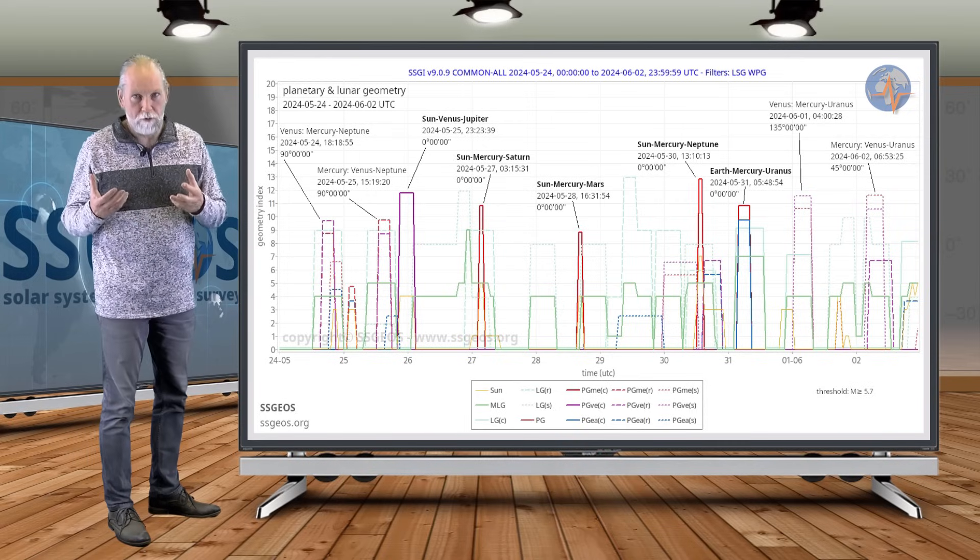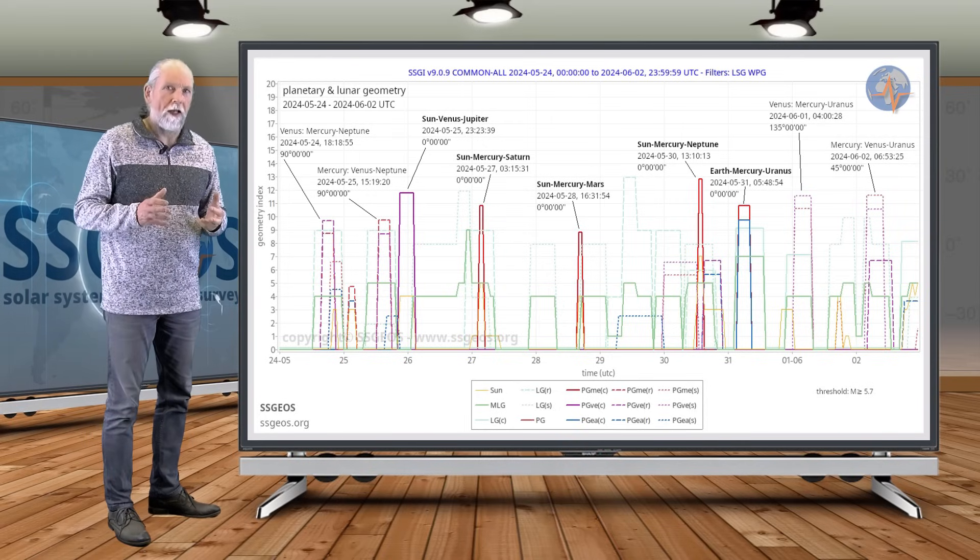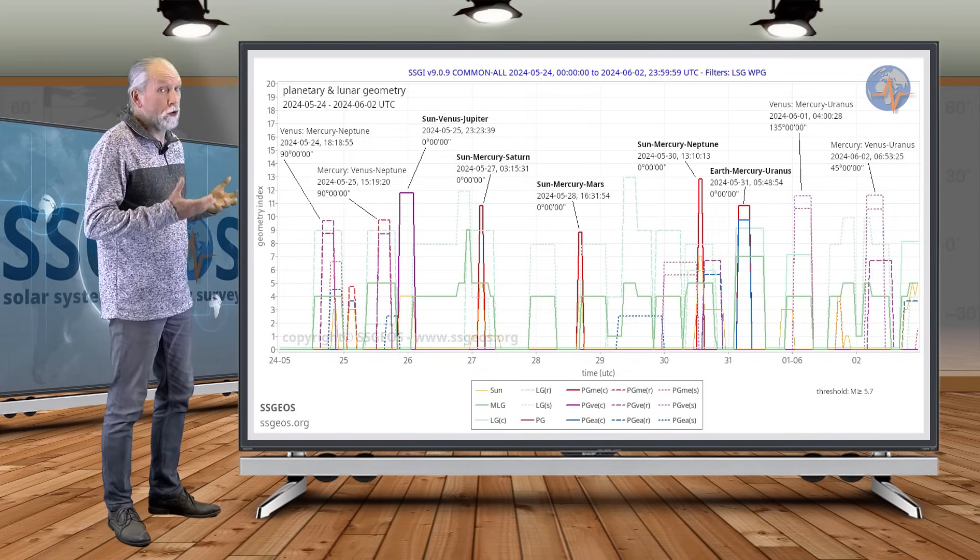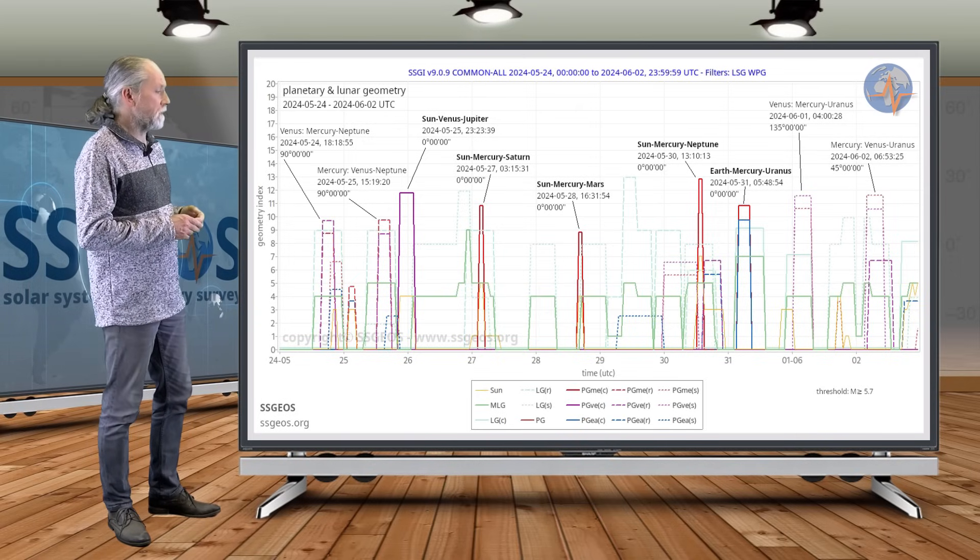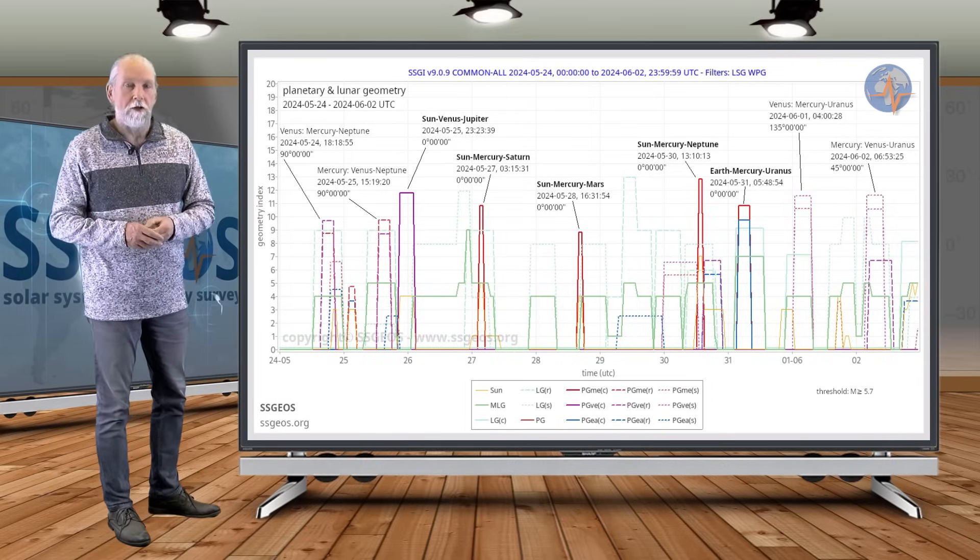And that could also result in some stronger seismic activity, but probably, again, not as critical as right angle geometry. But that would or could result in some increased seismic activity on the 3rd or the 4th of June, which I will cover in the next update.